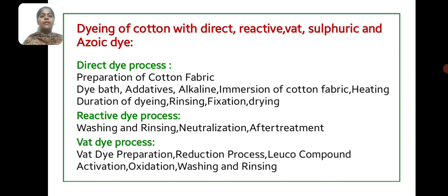Dyeing of cotton with direct, reactive, vat, sulfur, and azoic dyes. The direct dye process involves: preparation of cotton fabric, dye bath, addition of alkali, immersion of cotton fabric, heating, duration of dyeing, and rinsing, followed by fixation of dye.